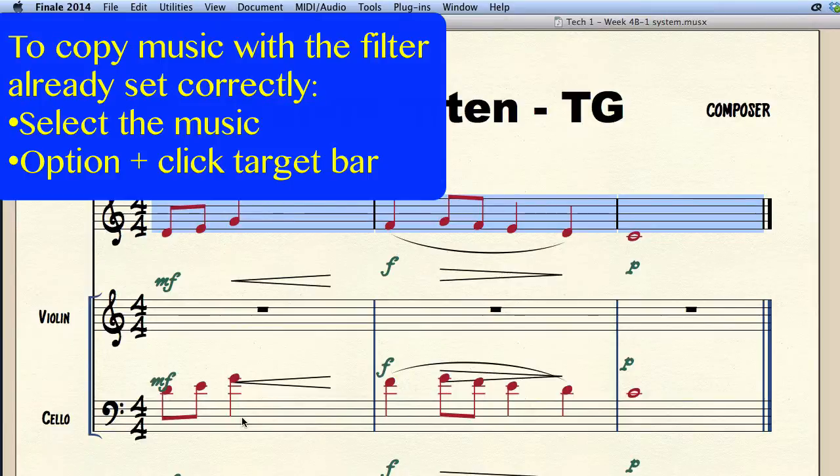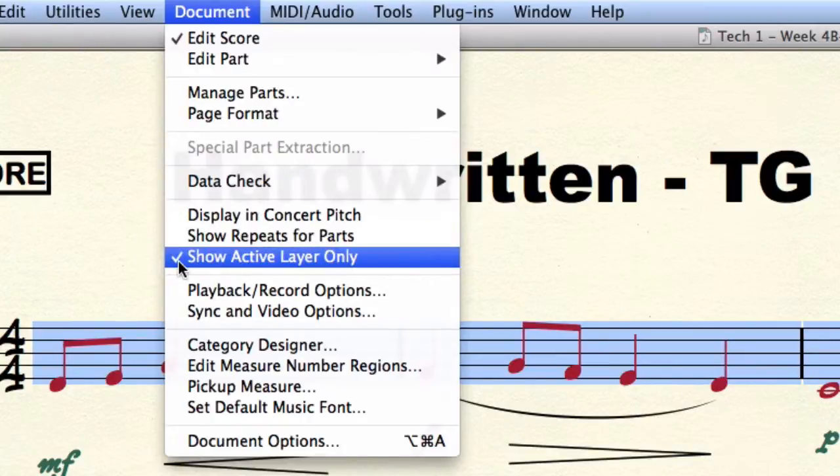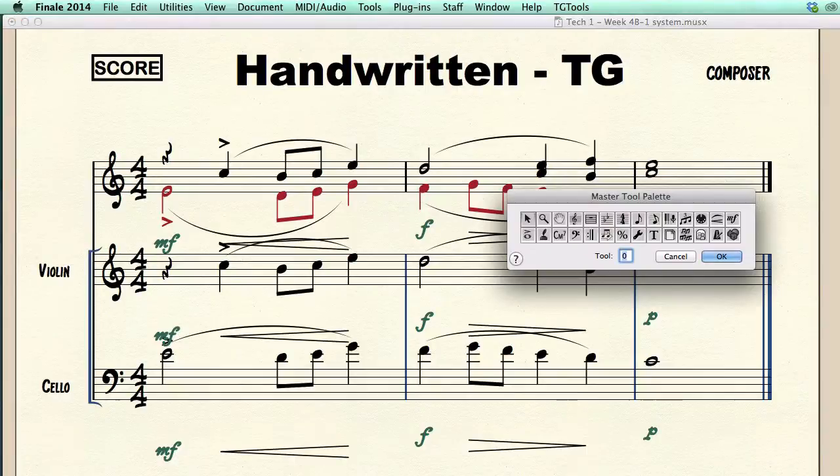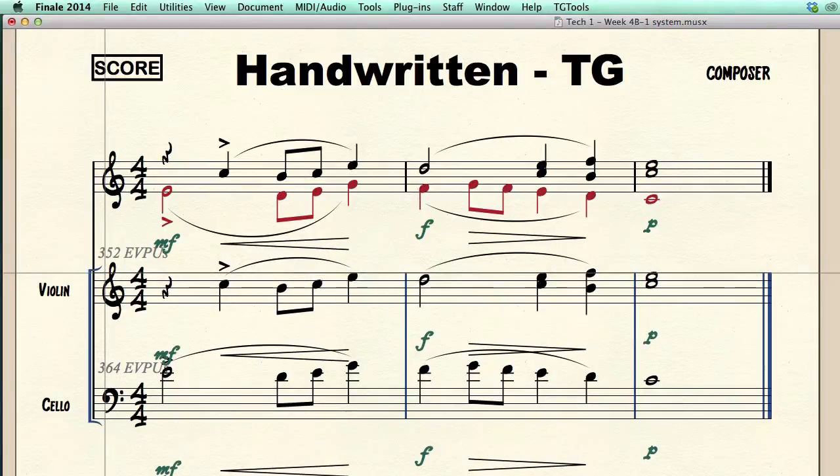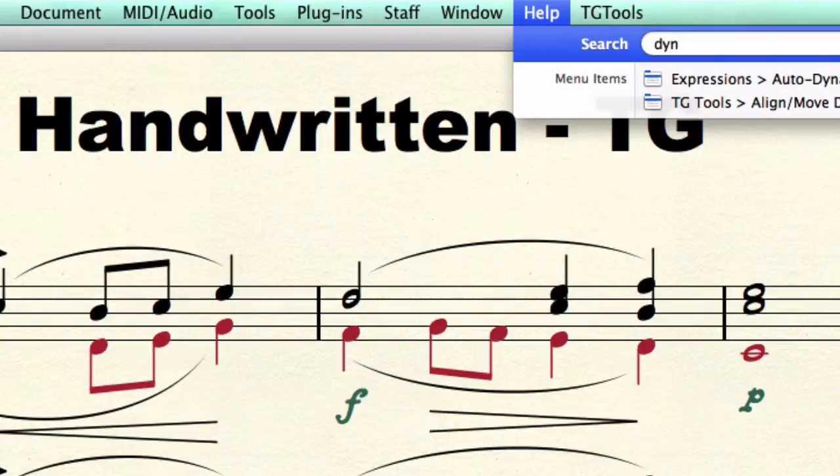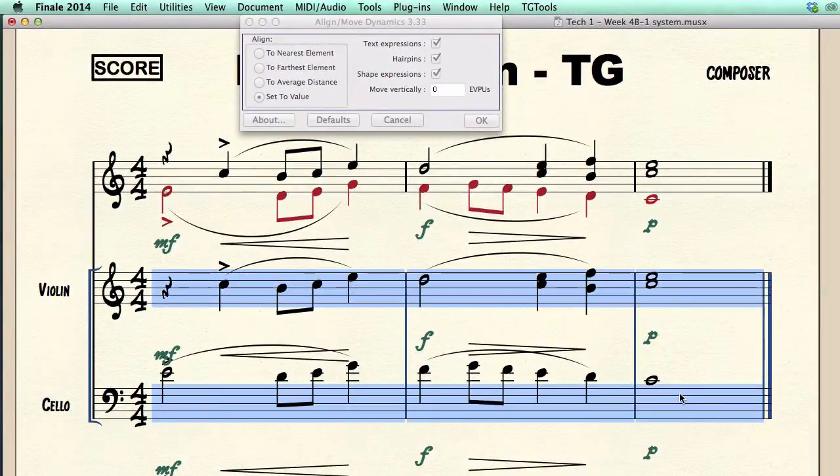Now that we copied both layers to individual staves we need to uncheck show active layer only in the document menu to see all the layers. All we have to do now is cleaning up the clashes by using the staff tool to create more space between staves and running the align move dynamics plugin to move the dynamics elements closer to the staves.